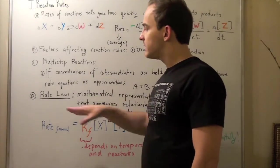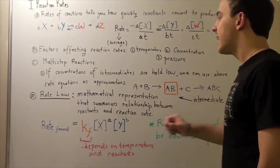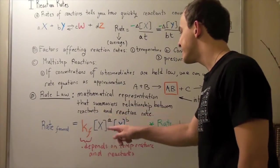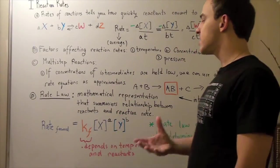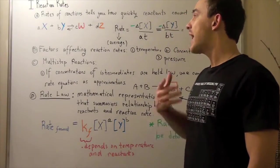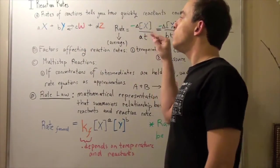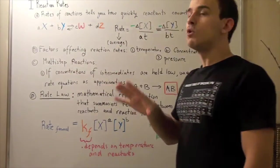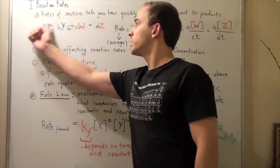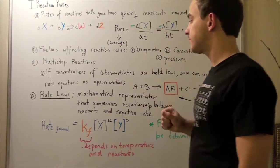Let's talk about the rate law. The rate law is a mathematical representation that summarizes relationship between reactants and reaction rate. And it also builds a relationship between our rate constant and our rate of reaction. Notice, in this reaction, we have a forward reaction and a reverse reaction. We're only going to worry about the forward reaction. But know that if there's a forward reaction, there could also be a reverse reaction.